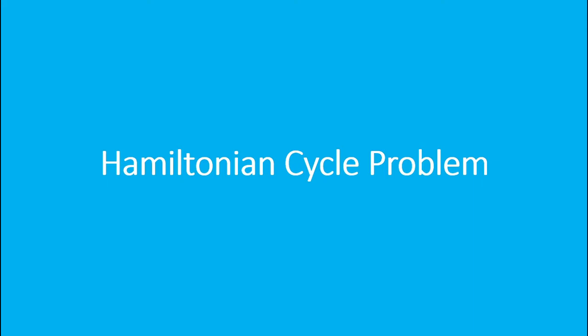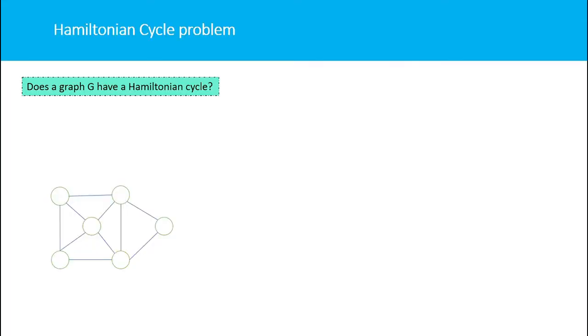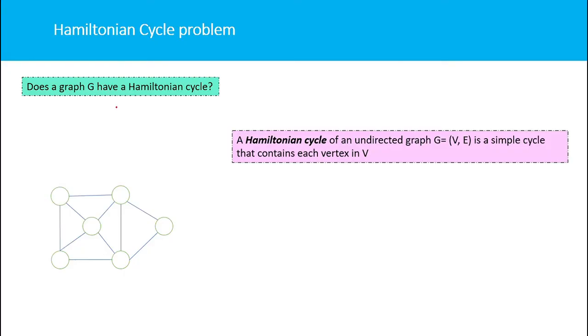Hamiltonian cycle problem: Given a graph G, does it have a Hamiltonian cycle or not? This is a decision problem. A Hamiltonian cycle is a cycle